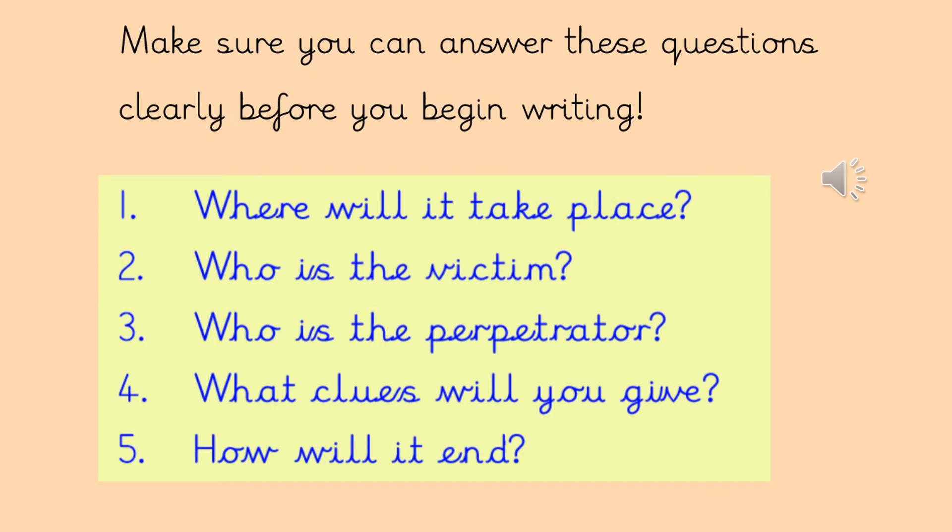Make sure that you can also very clearly answer these questions: Where is it going to take place? Who's the victim? Who's the perpetrator — so which two animals have you chosen? What clues will you give? You might give a sound that one of them might make, or a hiding place that one of them might be in. But make sure it doesn't give away the animals until right at the end, because the last question you need to answer is how will it end — because that plot twist is the really exciting bit of your story. You need to have it really clearly in your head how you're going to give it away.